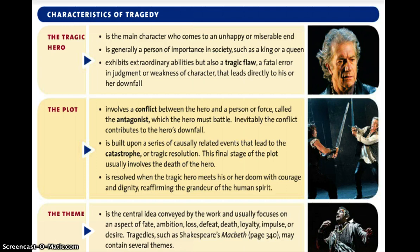Shakespearean tragedies also share similar plot characteristics with Greek tragedies. In a Shakespearean tragedy, the plot involves a conflict between the hero and a person or force called the antagonist, which the hero must battle. Inevitably, the conflict contributes to the hero's downfall. The plot is built upon a series of causally related events that lead to a catastrophic or tragic resolution. This final stage usually involves the death of the hero, resolved when the tragic hero meets his or her doom with courage and dignity, reaffirming the human spirit.